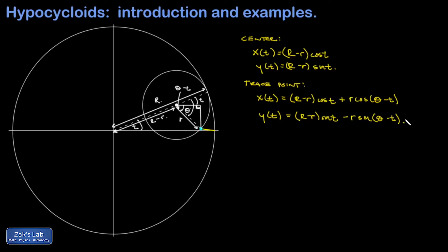There is one more critical piece: we must parameterize entirely in terms of one parameter t, so we need a relationship between theta and t. Since the small circle rolls without slipping inside the bigger circle, the two arc lengths traced out must be equal. Using s = rθ, the arc on the small circle is little r times theta, and that must equal the arc on the big circle, which is big R times t.